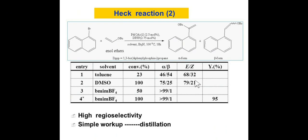Another Heck reaction is here. We get higher selectivity with simple workup by distillation. Higher regioselectivity means we get almost 70 to 80% E to Z ratio, and alpha to beta is almost 99 to 1%, and percentage of yield is almost 95%. We get higher selectivity of 99 to 1. If we compare other solvents like DMSO and toluene, we get 50:50 or 75:25% regioselectivity.